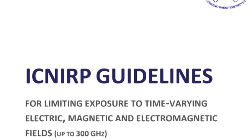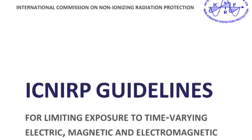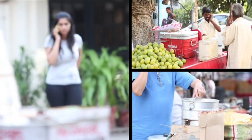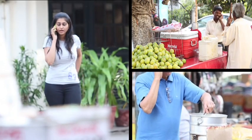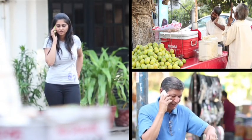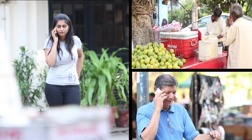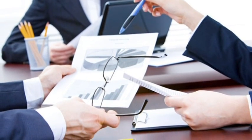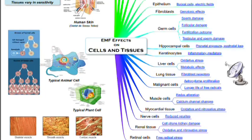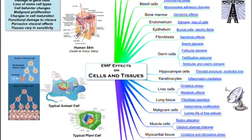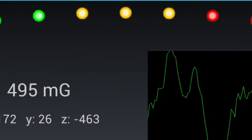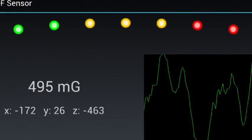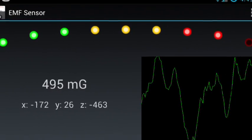ICNIRP is an international agency recognized by the World Health Organization. The limits were set after monitoring and studying research reports on the effect of EMF on human health from across the world. Such studies include both negative and positive research reports and are based on the weight-of-evidence methodology. These limits are also reviewed regularly to take note of any scientific or research updates.